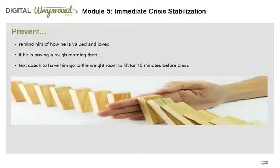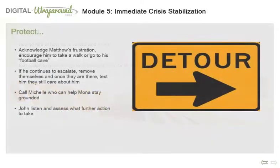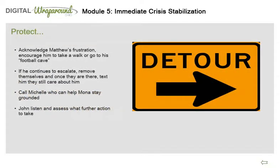Matthew will follow the schedule on the refrigerator after he comes home from school on his own. Mona and John will avoid prompting Matthew about chores on the schedule until an hour before bedtime. If Mona or John notice Matthew is starting to get tensed up or agitated, they will acknowledge his frustration but remind him that his brother may not understand it and ask if he wants to go for a walk one-on-one and/or talk it out. If Matthew continues to be agitated — like fast walking, slamming doors, short responses, not playful — he will be encouraged to go to his football cave in the garage to work on plays he can share with his coach at the next practice. If Matthew starts yelling, throwing things, or swings his fist, Mona, John, and Steve will remove themselves to another room and text Matthew that they are there, they care about him, and they are a team no matter what.